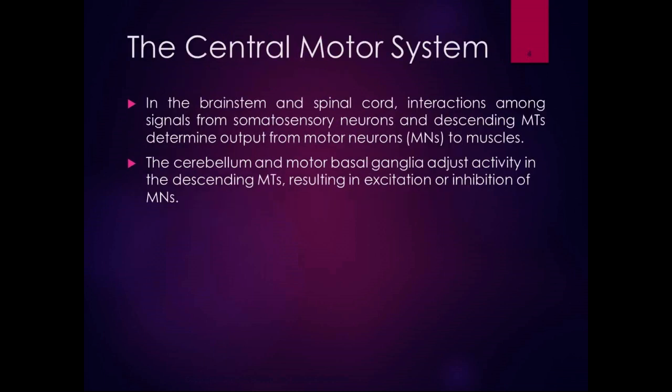The central motor system includes the brain stem, spinal cord, cerebellum, and cerebral cortex. In the brain stem and spinal cord, interactions among signals from somatosensory neurons and descending motor tracts determine the output from motor neurons to the muscles. The cerebellum and motor basal ganglia adjust activity in the descending motor tracts, resulting in either excitation or inhibition of motor neurons — essentially fine-tuning movements.